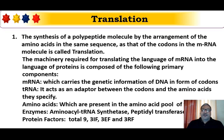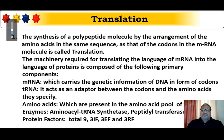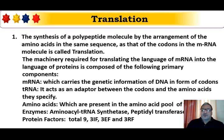The machinery required for translating the language of mRNA into the language of proteins is composed of the following primary components. Number 1, mRNA, which carries the genetic information of DNA in the form of codons. Then, transfer RNA, which acts as an adapter between the codons and the amino acid they specify. Third, amino acids, which are present in the amino acid pool of the cytosol. And enzymes — aminoacyl-tRNA synthetase and peptidyl transferase. A total of nine protein factors are required: three initiation factors, three elongation factors, and three releasing factors.